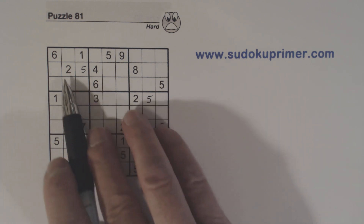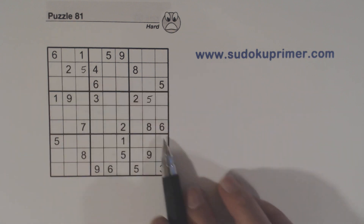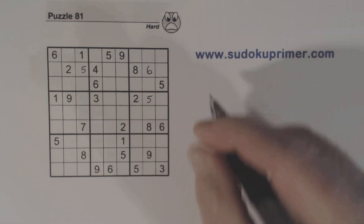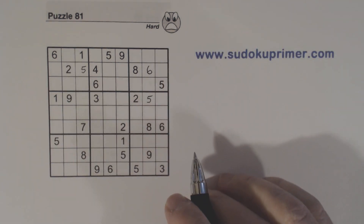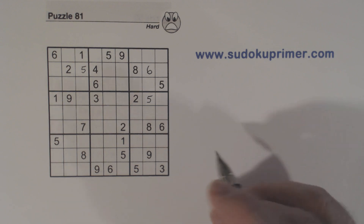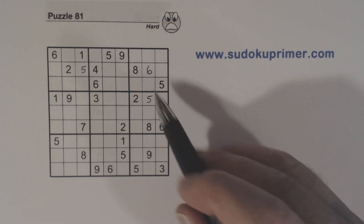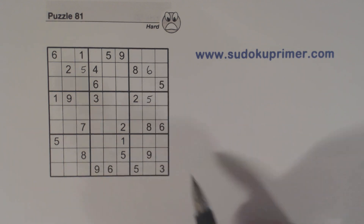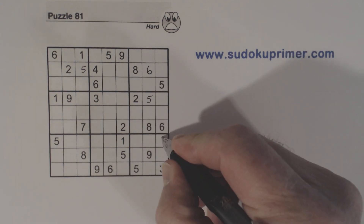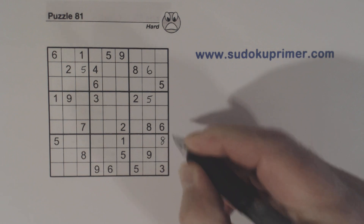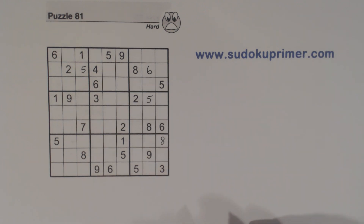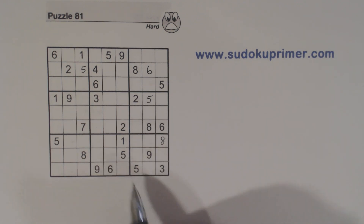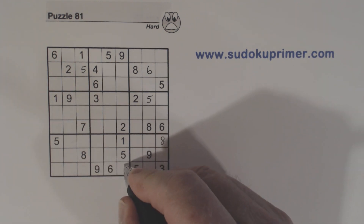Now we've got a 6 here, 6 here, 6 here, 6 here. And I've got an 8, and an 8, and an 8 there — 8, 8. So that's an 8.